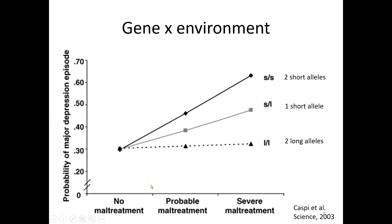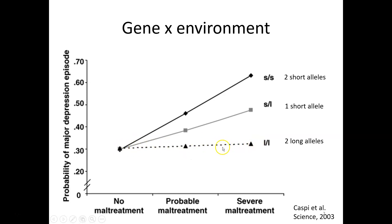Caspi and colleagues wanted to look at the relationships and interactions that this gene has with the environment. On the x-axis are different types of maltreatment: no maltreatment, probable maltreatment — which includes being ignored, harsh criticism, and physical abuse at a less severe level — and severe maltreatment. On the y-axis is the probability of a major depressive episode. Regardless of what type of allele you have, if you're in an environment without maltreatment, there's maybe only about a one-third chance of developing depression. People with two long alleles show a protective factor — no matter how bad the environment gets, their probability of a depressive episode stays roughly the same.